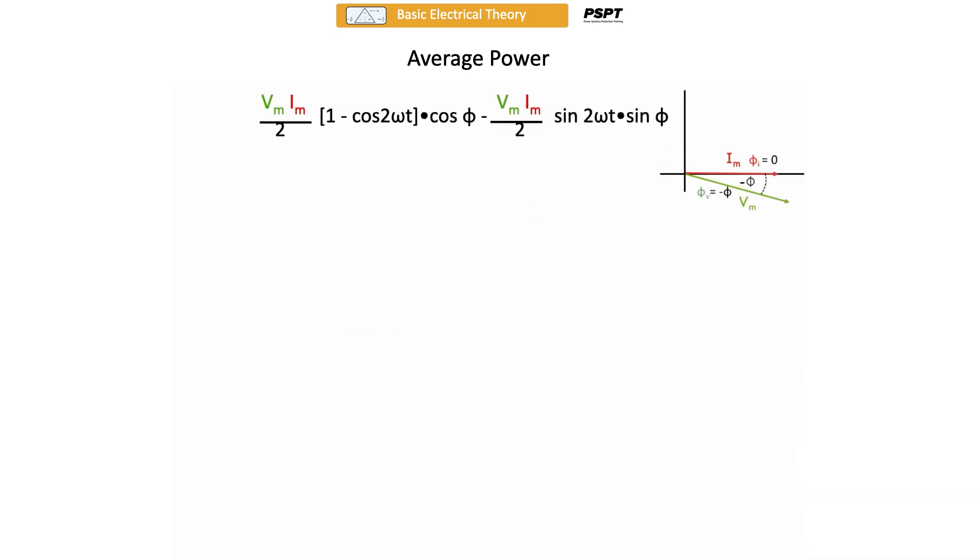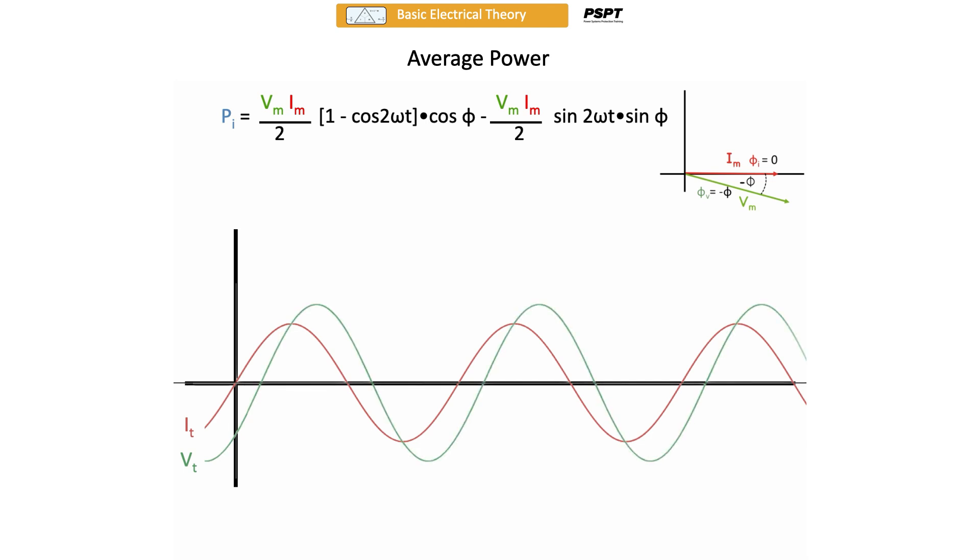I'm going to place the phasor diagram in the upper right-hand corner just for our reference as we go along. And keep in mind that this equation that we see here is describing the instantaneous power dissipated in the RC circuit. And for the moment I'm going to put the time domain current and voltages on the page. And I'm going to superimpose the computer generated instantaneous power graph in the time domain.